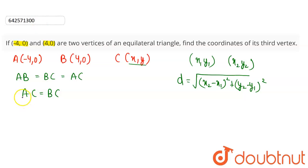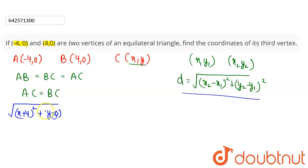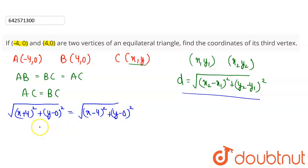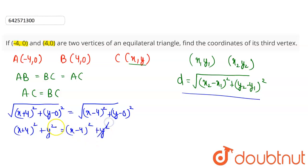The distance AC = √[(x + 4)² + y²], and the distance BC = √[(x − 4)² + y²]. Setting AC = BC and squaring both sides gives: (x + 4)² + y² = (x − 4)² + y². The y² terms cancel, leaving (x + 4)² = (x − 4)².